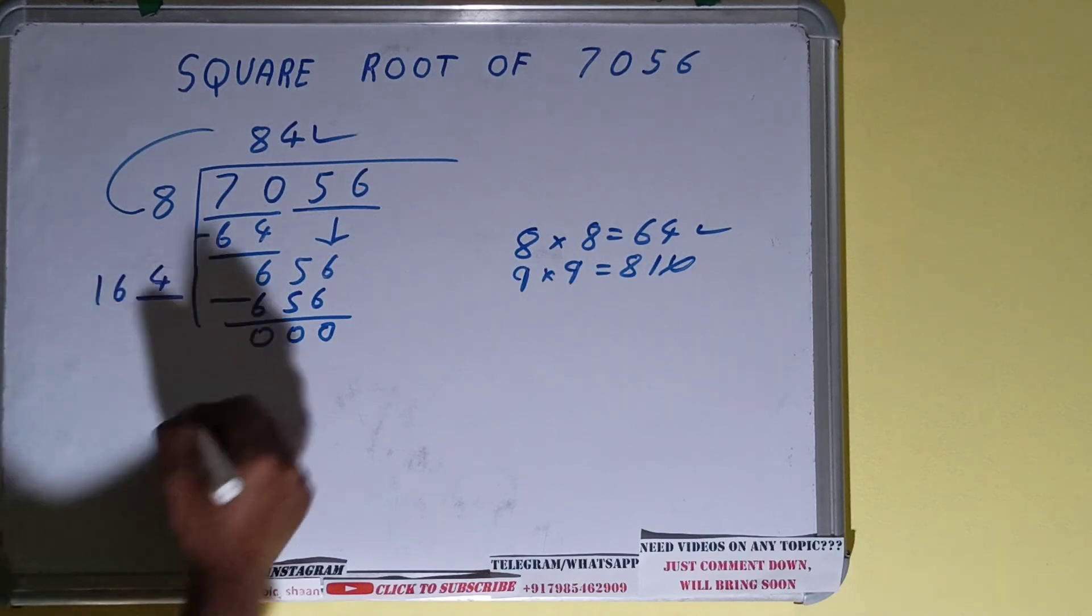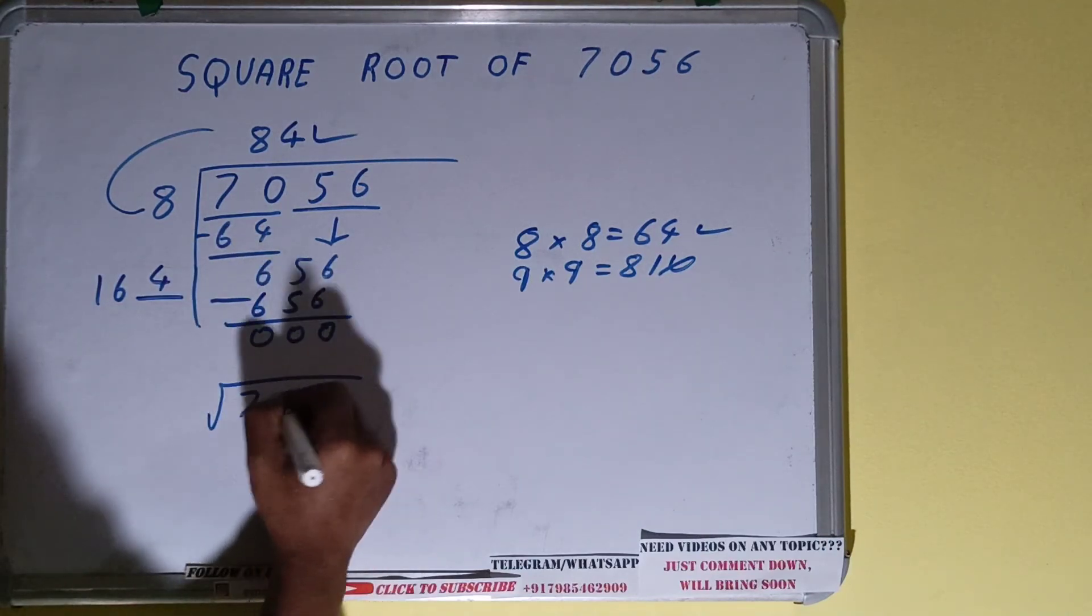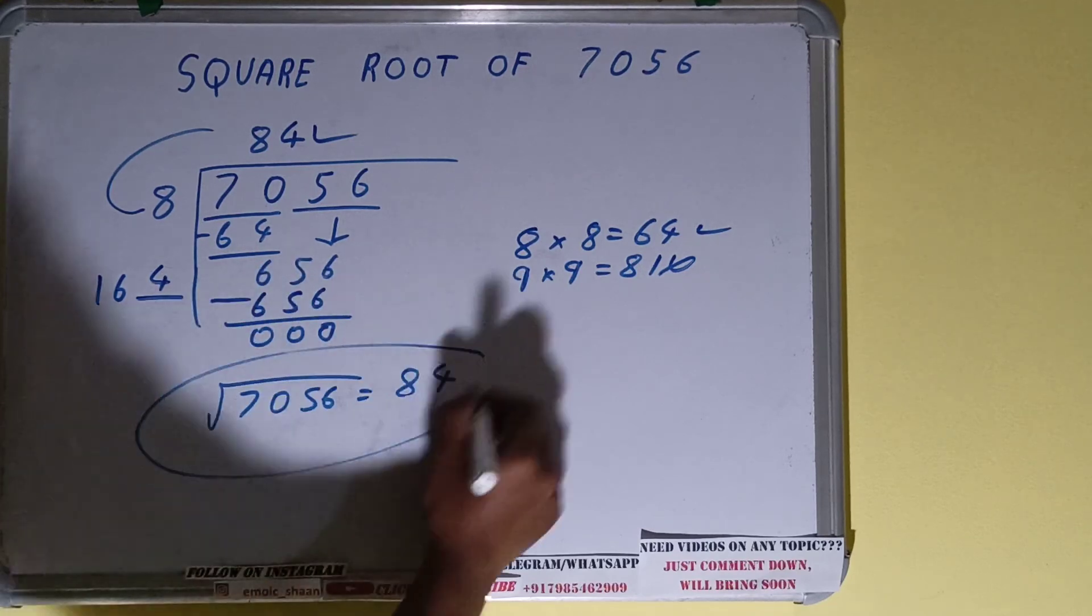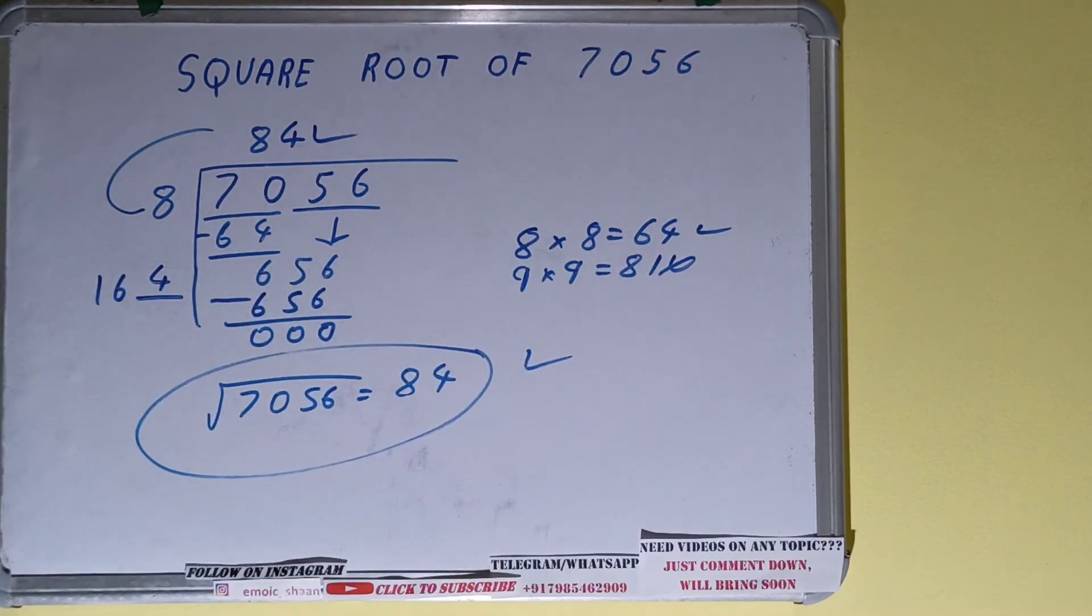Okay, so square root of 7056 is equals to 84. That's it. So this is all. If you found the video helpful, please turn the like button. Do consider subscribing and thanks for watching.